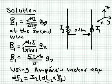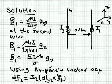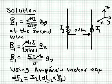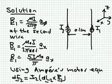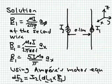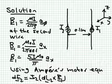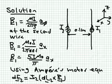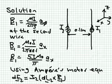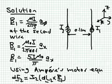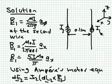We start by drawing a diagram. We have the first wire with current I1 and the second wire with current I2, both flowing in the z direction. I assume the direction coming out of the page is x and the direction pointing to the right is y.